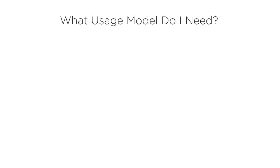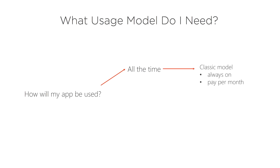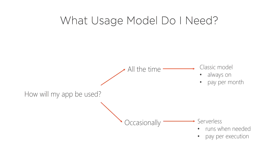The next big picture question is: what usage model do I need? This is about how your app will be used. If the answer is all the time — like a website or web application that's always on with users 24/7 — then you look at classic services that are always running, like a web app, and you pay for them all month. If your app only runs occasionally, say when a new message comes into a queue or every hour, then you look at serverless or logic-as-a-service — services that only run when needed and where you only pay for the execution.